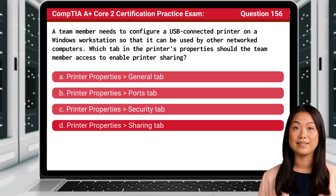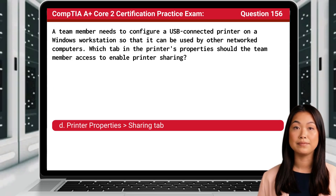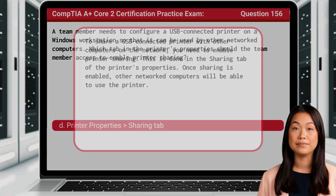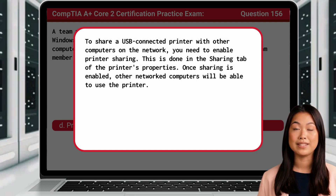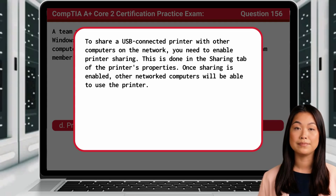The answer is D, the Sharing tab. To share a USB-connected printer with other computers on the network, you need to enable printer sharing. This is done in the Sharing tab of the printer's properties. Once sharing is enabled, other networked computers will be able to use the printer.